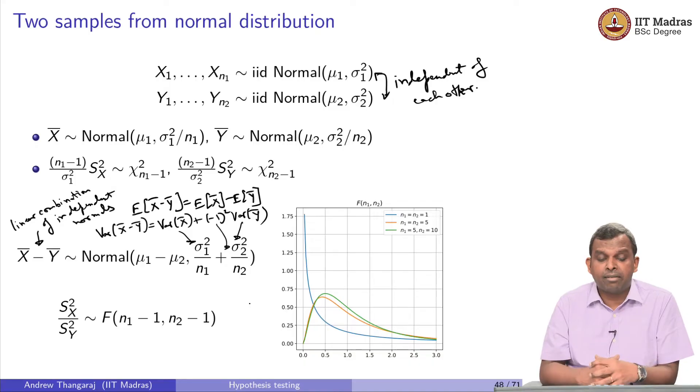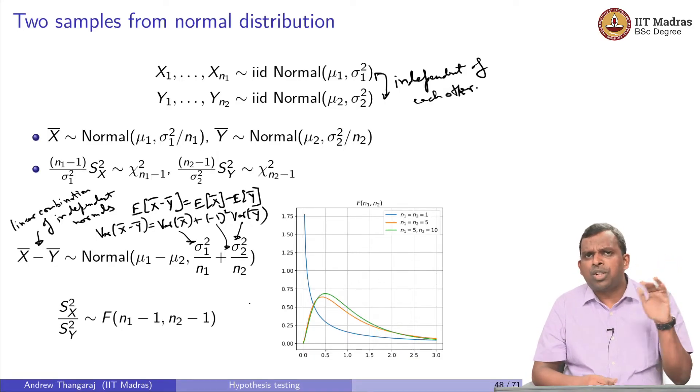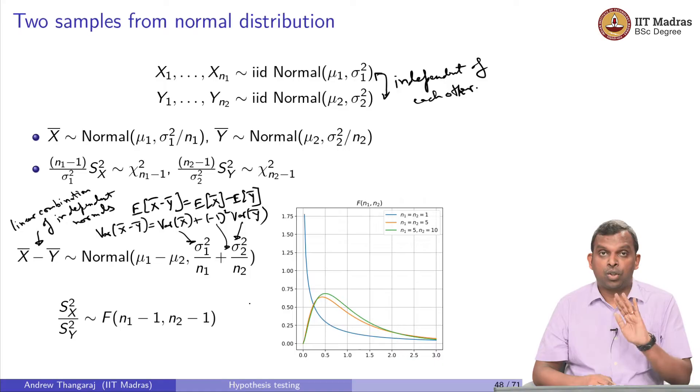Variance of X̄ you know is σ1²/n, variance of Ȳ is σ2²/n, and minus 1 squared just becomes plus 1. So it is easy to remember these things. If you know where they come from, it is very quick to derive. And when you know how to derive, you also tend to remember more.